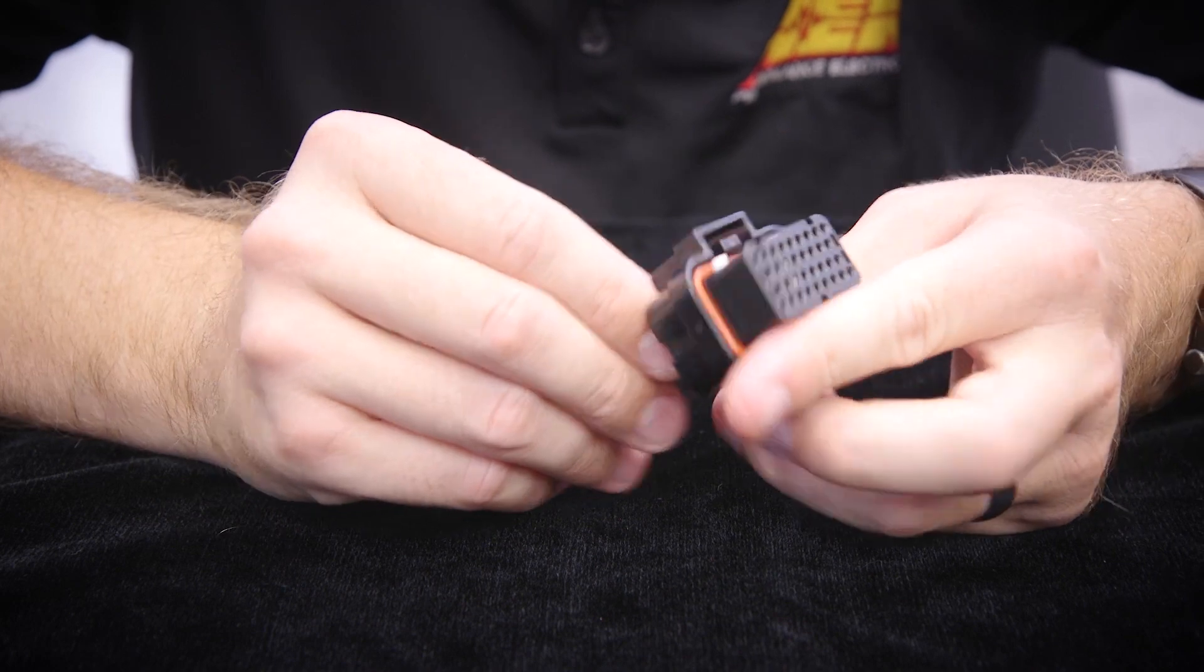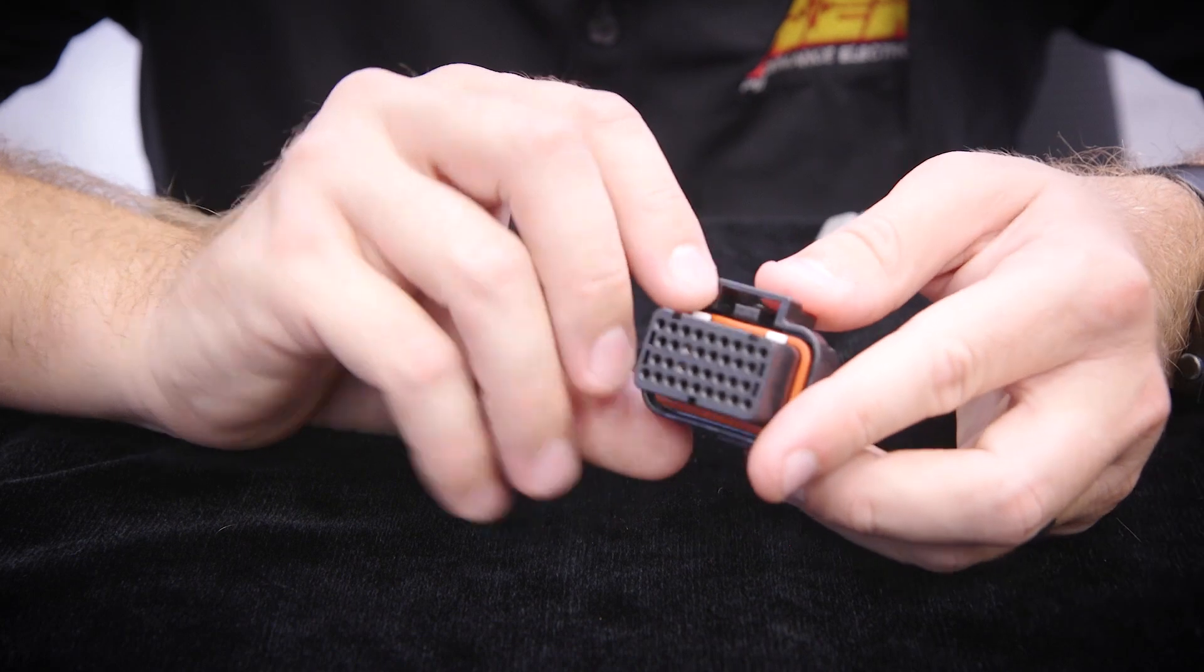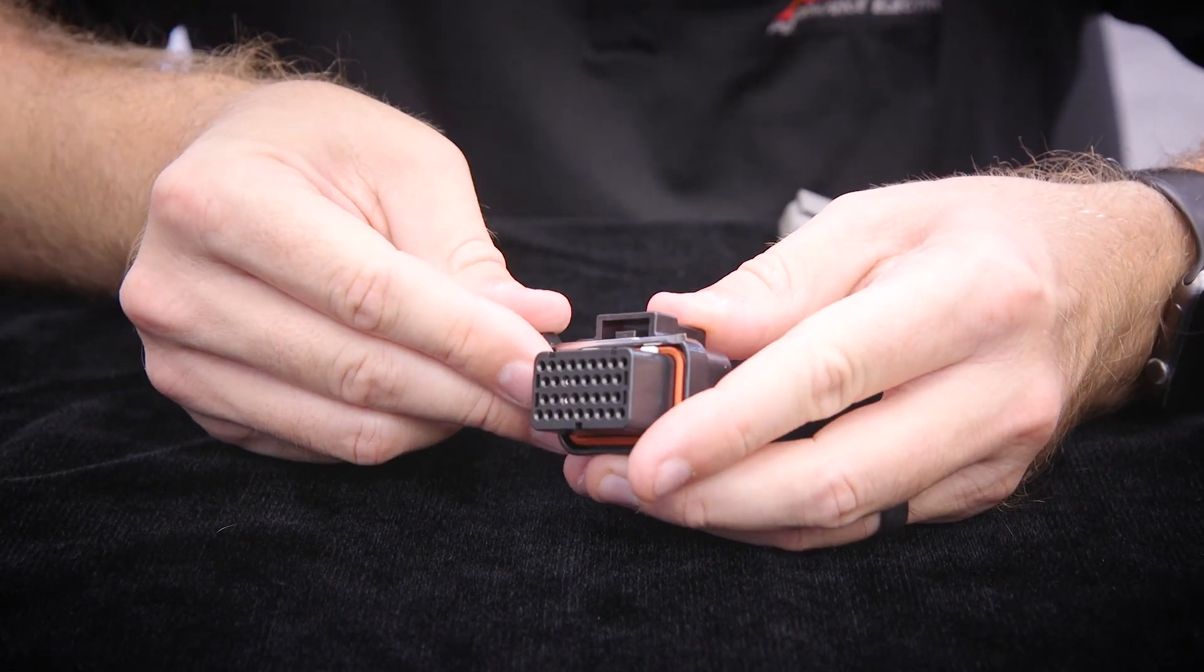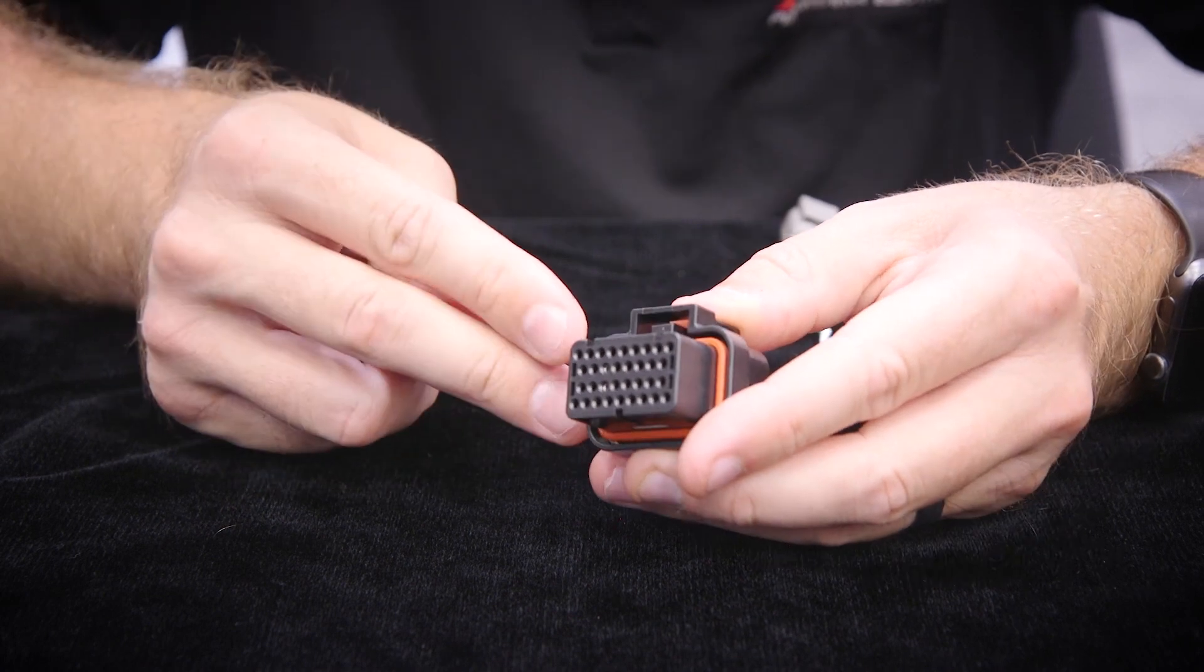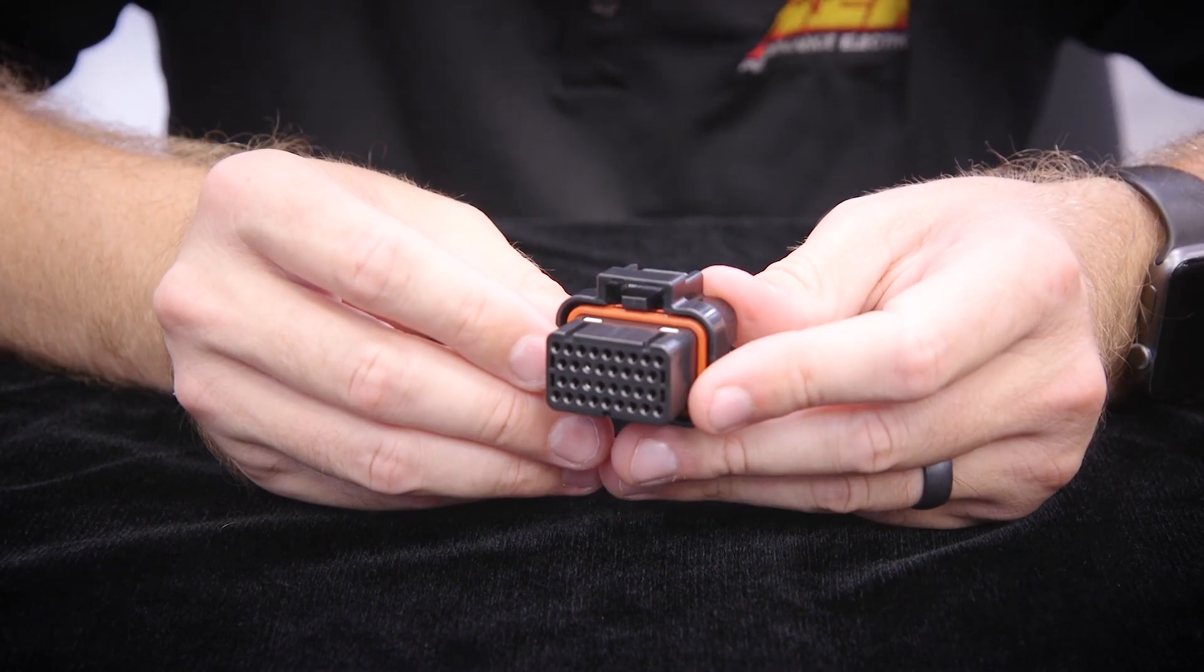Push these in until they fully seat. And last step is to push these lock assurance pins down. And if those go all the way down and lock into place you know you've got your terminals inserted all the way.